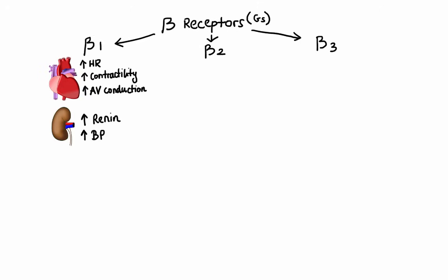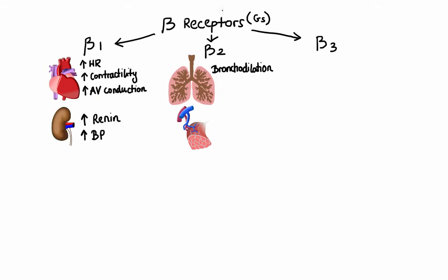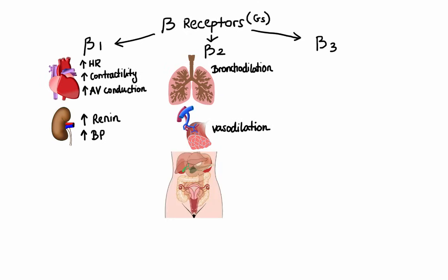Beta-2 receptors are mainly located in the lungs on the bronchial smooth muscle, and when activated, they lead to bronchodilation. They are also located on the vascular smooth muscle in the arteries of skeletal muscle, and when activated, they lead to relaxation of blood vessels — or in other words, vasodilation. They are also located on smooth muscle in the GI tract and uterus, and when activated, they lead to smooth muscle relaxation, which in the GI results in decreased motility, and in the uterus it can cause inhibition of labor. Lastly, beta-2 receptors can be found in the pancreas, and when activated, they lead to increase in insulin secretion.